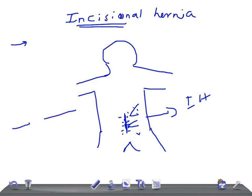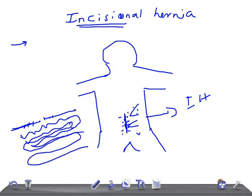To illustrate: if this is the abdominal wall with an incision, and the sutures leave a space, the intestine or any abdominal content will start to protrude through that space. This is what incisional hernia looks like — it results from weakness of the surgical wound.